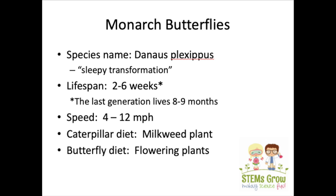They don't fly very fast, anywhere from about four to 12 miles per hour. They can only survive eating one type of plant. Could you imagine only being able to eat one type of food for your entire life? That's what the caterpillars have to do, and all they can eat is the milkweed plant.